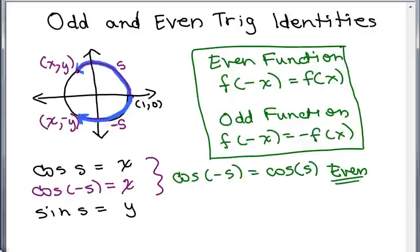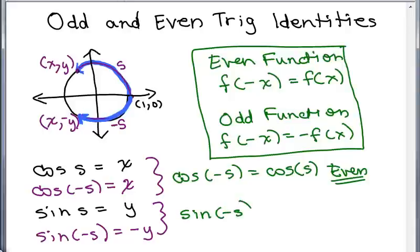So cosine is an even function by the definition. What about the sine of negative s? The sine of negative s is the y coordinate of this ordered pair and it's negative y. The sine of s is y, but the sine of negative s is negative y. This says the sine of negative s is not the same as the sine of s — it's the opposite of y, which is the opposite of the sine of s. So the cosine is an even function, whereas the sine is an odd function.